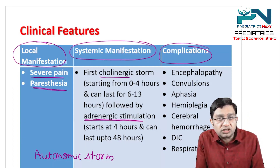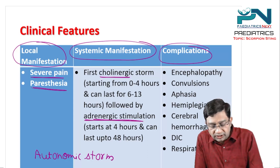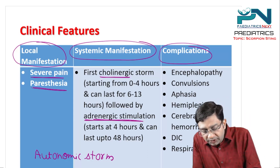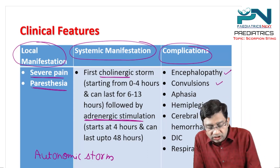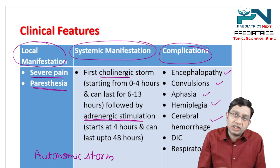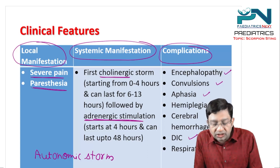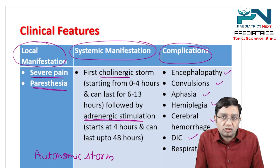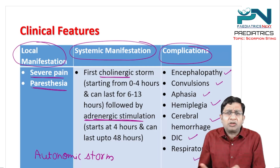Complications are related to the nervous system as well as respiratory failure. There can be encephalopathy, convulsions, aphasia, hemiplegia, and cerebral hemorrhage. Hematological complications can also be seen — disseminated intravascular coagulation — and respiratory failure.